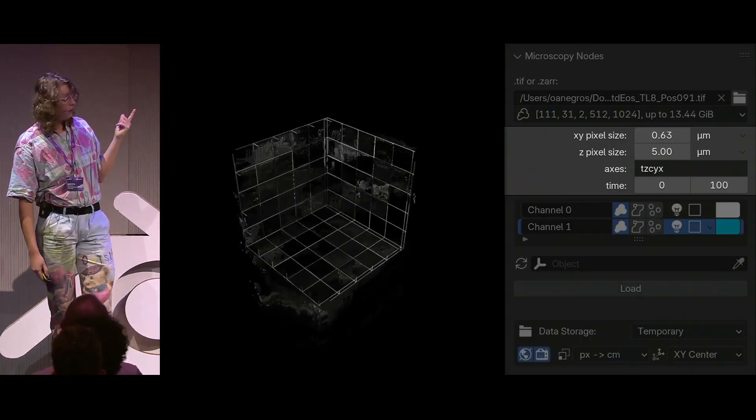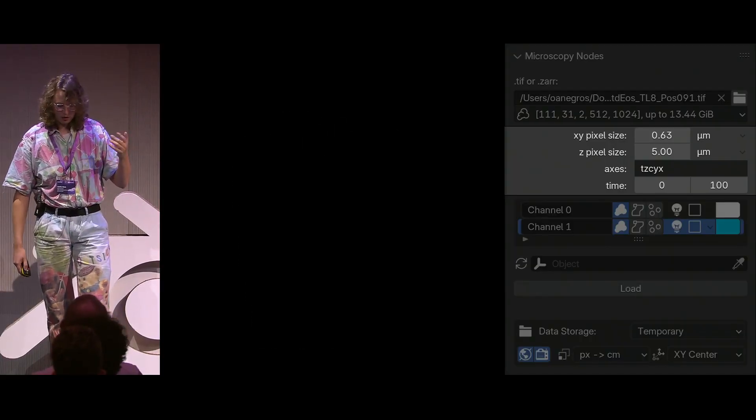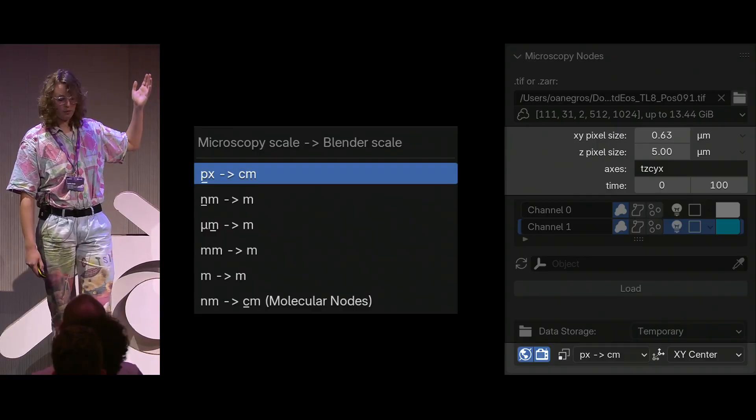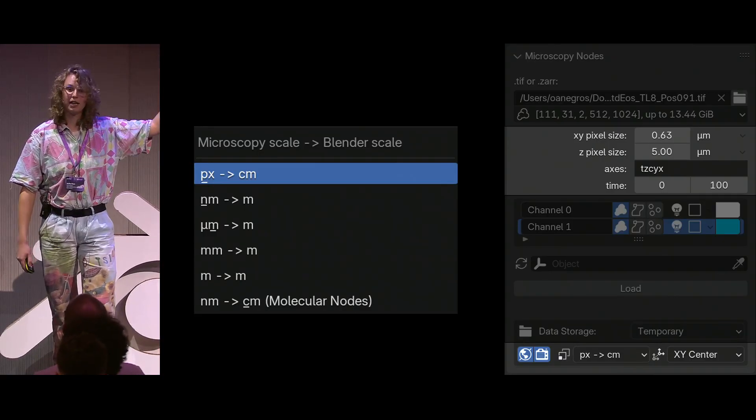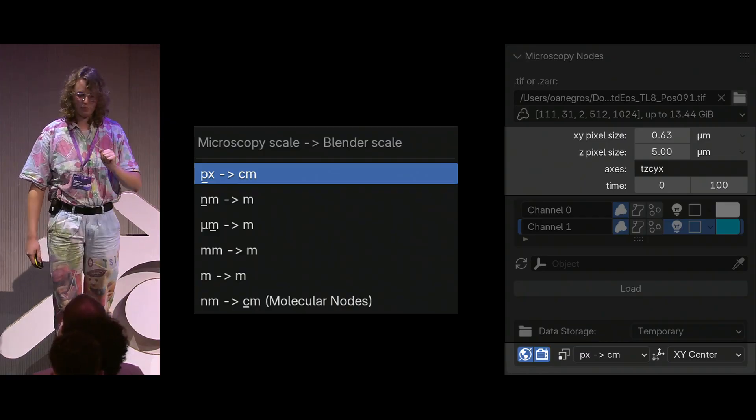But this is not the only way that you can actually get scale in there. There's also a way where you map your microscopy scales directly to your blender scales, like every micron, every blender meter is a micron, or every blender meter is a nanometer.